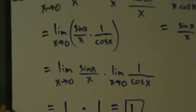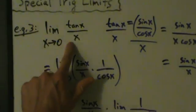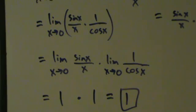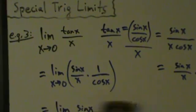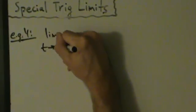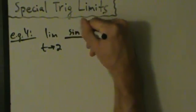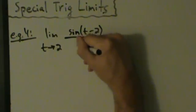Example 3 tells us that the limit as x approaches 0 of tangent of x divided by x is also equal to 1 — that's kind of interesting. Alright, let's take a look at two more examples. Example 4: the limit as t approaches 2 of sine of (t minus 2) divided by (t minus 2).